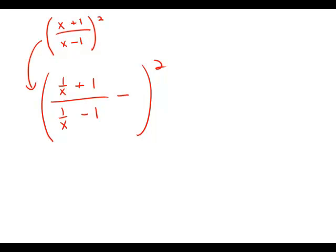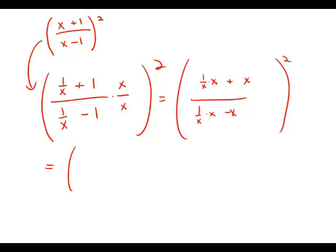So I'm just going to multiply by x over x, just to try and clear those fractions. And what I get is 1 over x times x plus x over 1 over x times x minus x. And that is 1 plus x over 1 minus x.